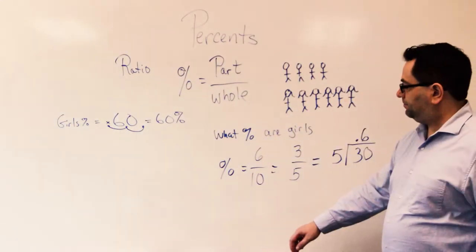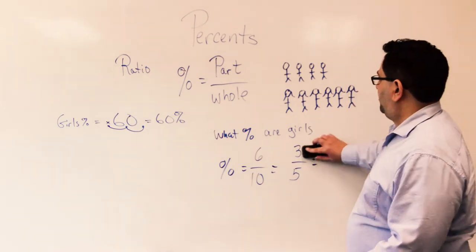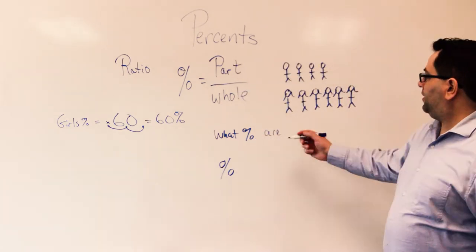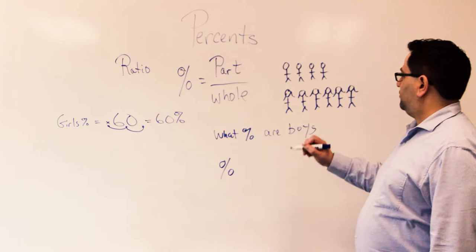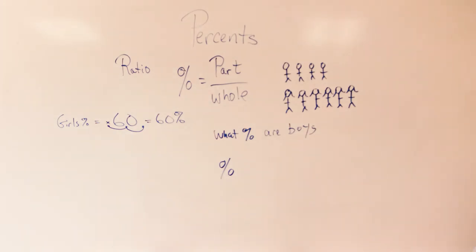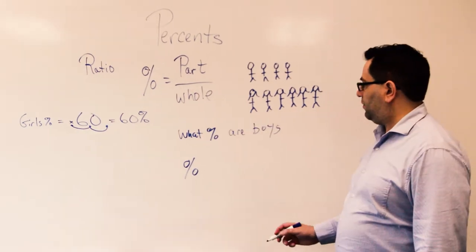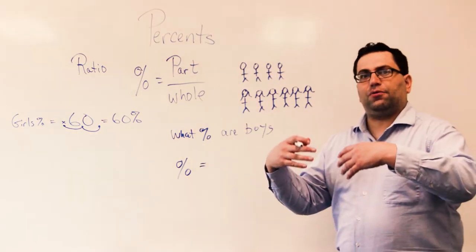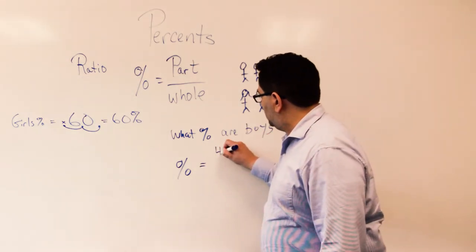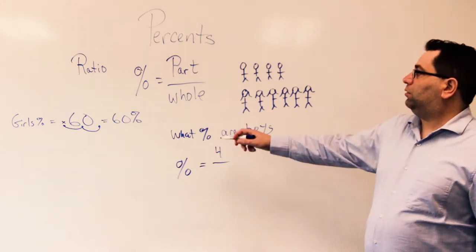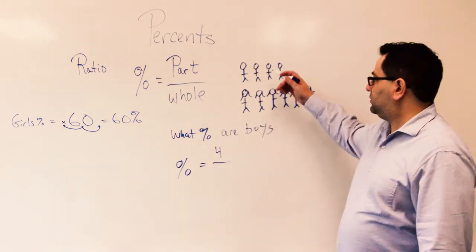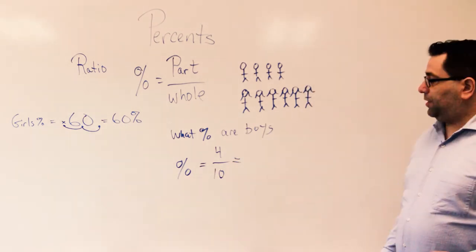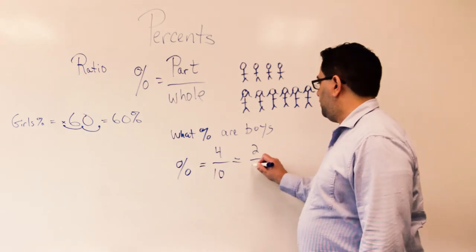Let's try one more of this type. What percentage are boys? Again, percentage is still part divided by whole. But I have to ask myself — it's not the part that are girls now, it's the part that are boys. And there are four boys. My whole has not changed at all; my whole is still ten. Using a little divisibility, I have two over five.